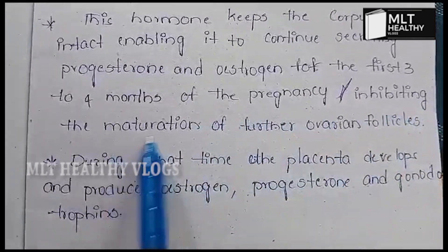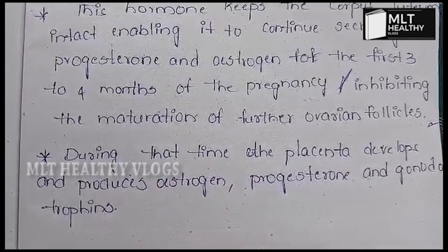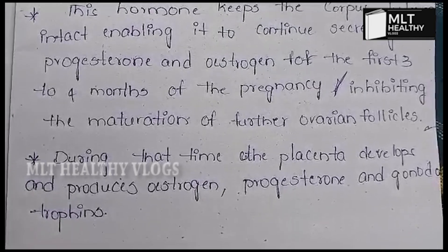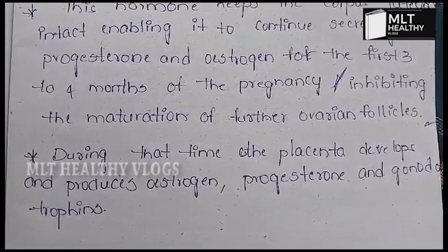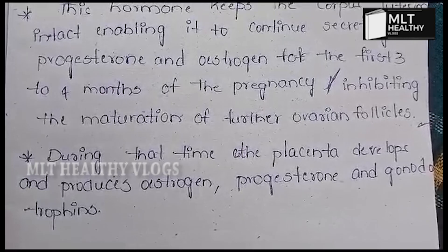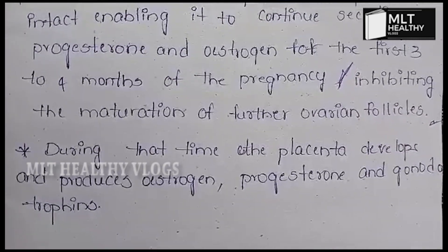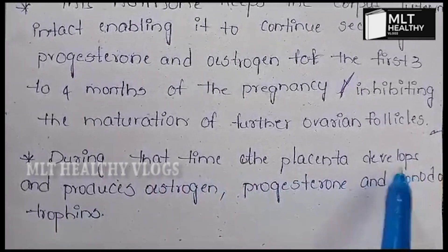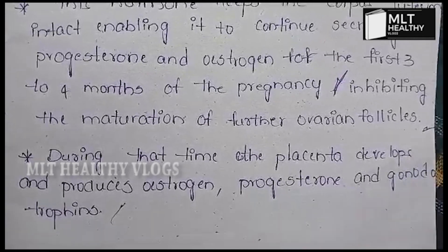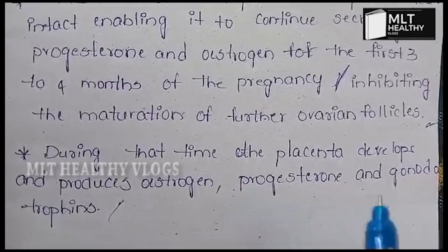The hCG inhibits the maturation of further ovarian follicles, so no new ovum matures while the embryo is implanted. During that time, the placenta develops and produces estrogen, progesterone, and gonadotrophin to maintain the pregnancy.